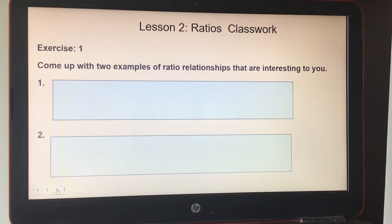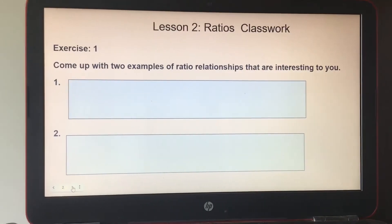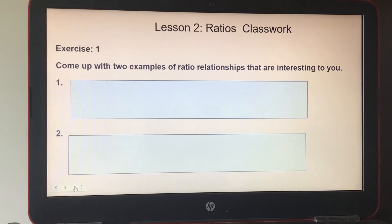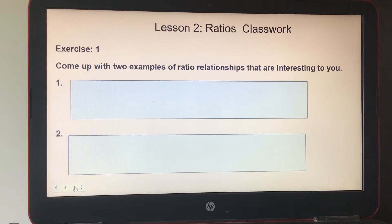For the first page, Exercise 1, it says come up with two examples of ratio relationships that are interesting to you. I'll give you an example. If I said three PlayStation 5 systems to 20 games, then I would write the words out and then I would also put my ratio, three to 20. So go ahead and do those two problems.